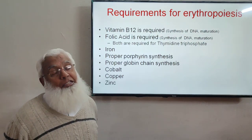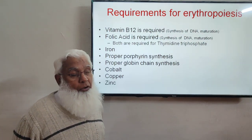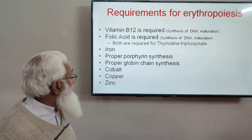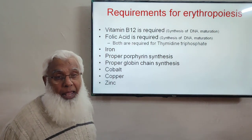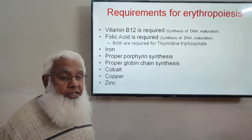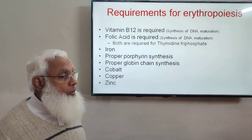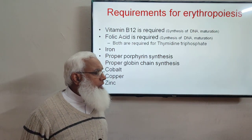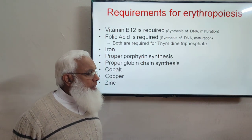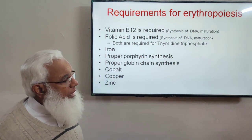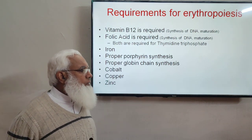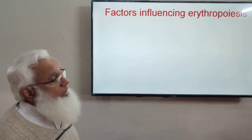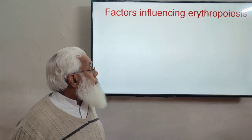The three trace elements important for erythropoiesis are cobalt, copper, and zinc. These are present in very small amounts in the blood but are essential for the formation of RBCs.